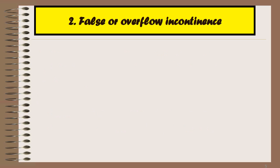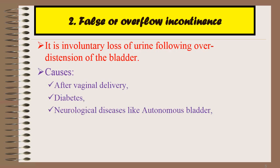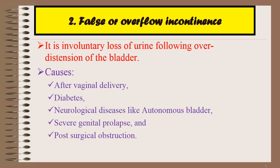False incontinence is also known as overflow incontinence, in which there is involuntary loss of urine following over-distension of the bladder. The causes include complications after vaginal delivery, diabetes, neurological diseases like autonomous bladder, severe genital prolapse, and post-surgical obstruction.